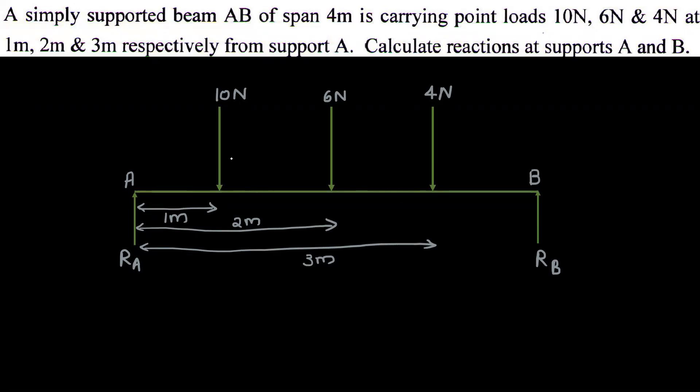In this case, we have 10N at 1m, 6N at 2m, 4N at 3m. So if we have beam AB, we have support A and B. We have reaction RA and RB.